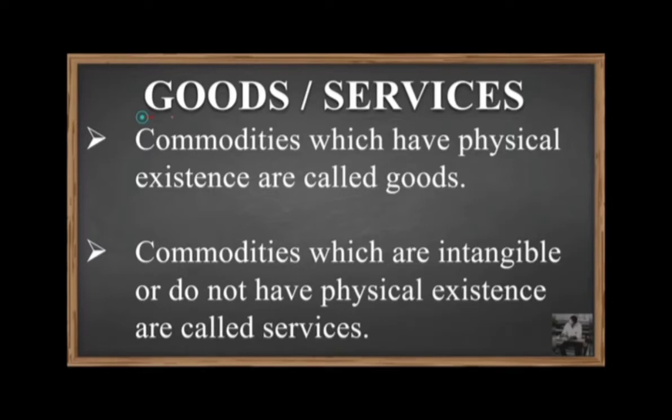Some human wants are material and physical — eating, drinking, playing, etc. These things are measurable and material, so they can be termed as goods. In economics, all material and non-material goods are included in the category of goods. Both material and non-material are involved in goods.